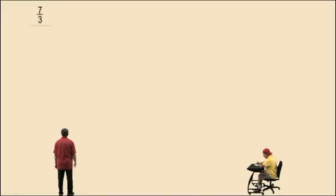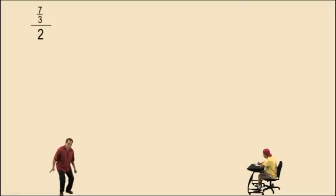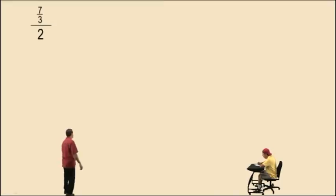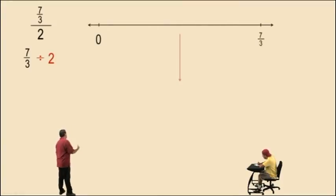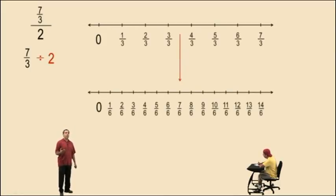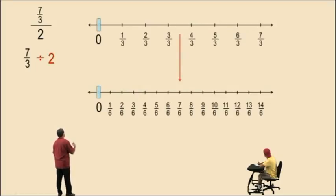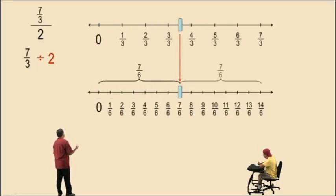Let's try seven-thirds divided by the whole number two. This basically means that you're cutting it in half, right? If you divide something by two, you're cutting it in half. So let's write it using the division symbol and bring up a number line. We have seven-thirds and we're going to cut it in half. To show the midpoint, we're going to need a number line with sixths on it. Seven-sixths is right in the middle, and if you add another seven-sixths, that gives you fourteen-sixths, and fourteen-sixths is equivalent to seven-thirds.